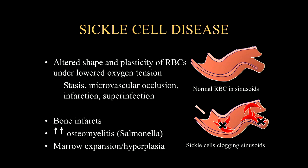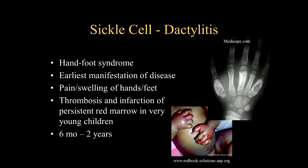With the anemia that occurs, the body has to recruit red blood cells, so there is going to be marrow expansion as well as hyperplasia within the bones, as well as extramedullary hematopoiesis. This involves thrombosis and infarction of the red marrow. In children, there's a prevalence of red marrow throughout the body, and when the sickle cells occur, they can clog up and create infarcts, specifically in the hands.